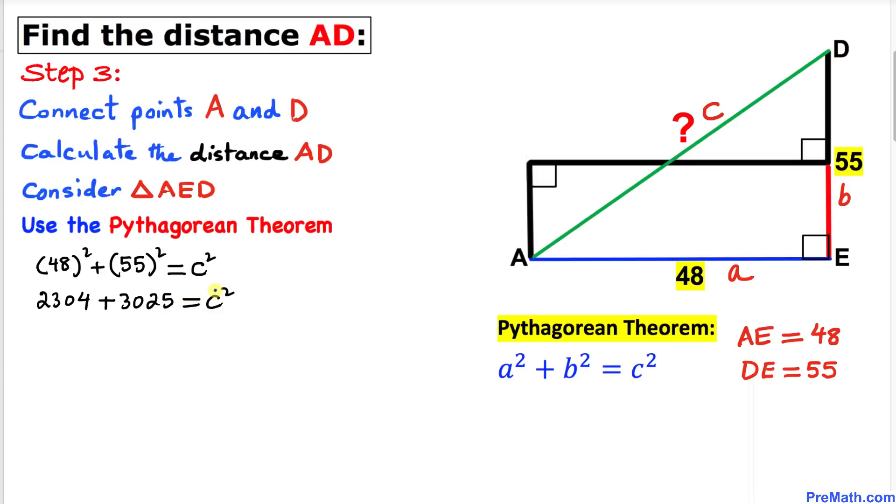Plus 55 squared is 3025 equal to c squared. Let's go ahead and add these numbers, so c squared turns out to be 5329. Let's undo this square by taking the square root on both sides.